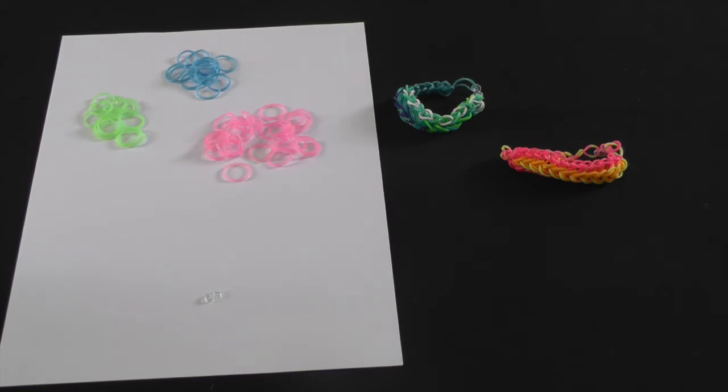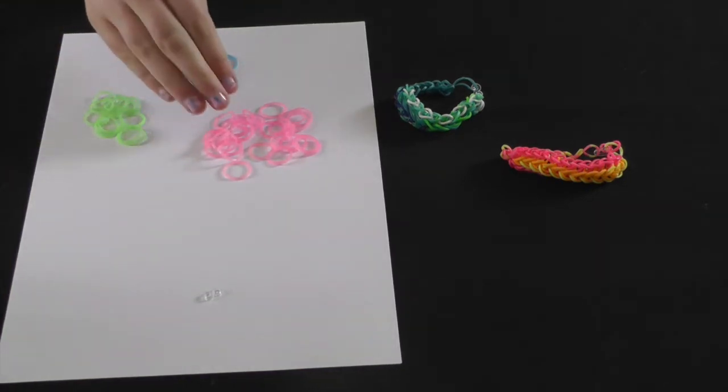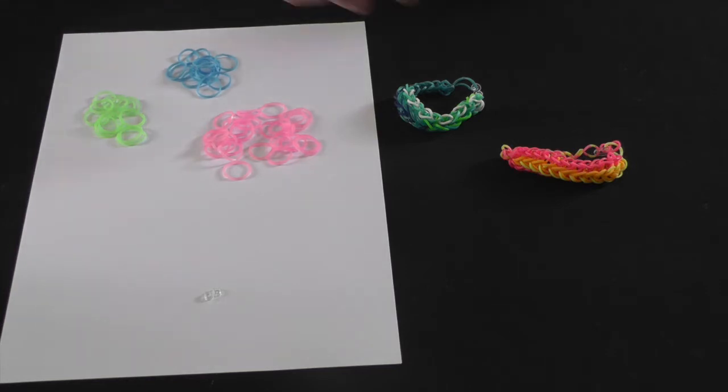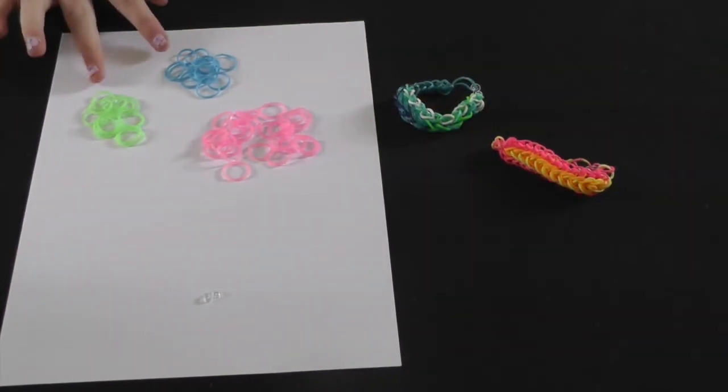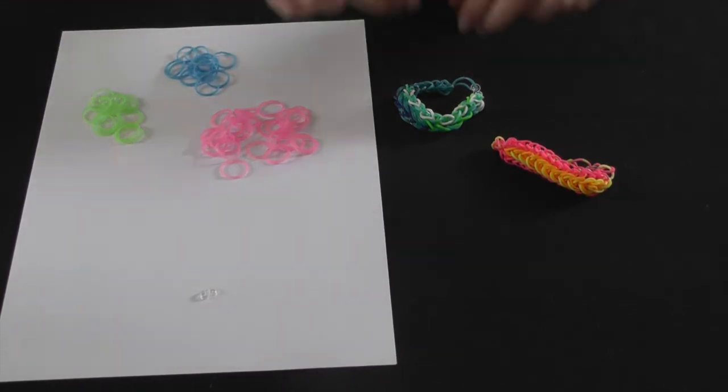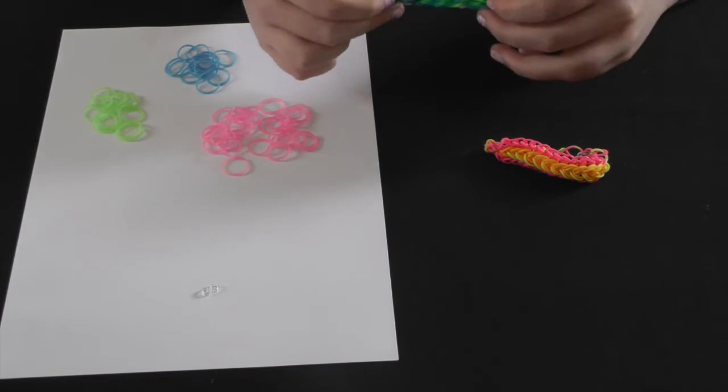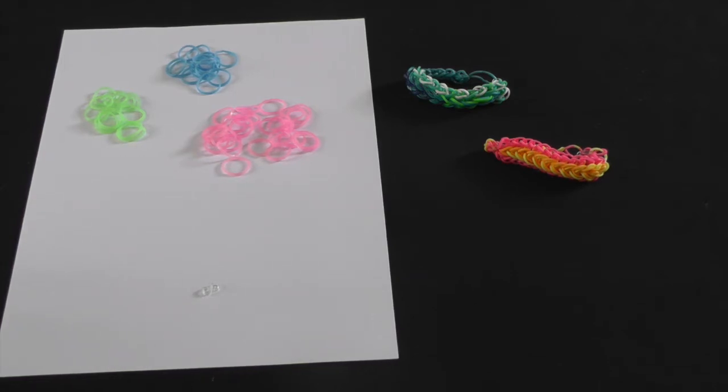What we're going to need to make the bracelet is 24 or 25 of one color of bands, which makes the outside, this bit. Then we will need two sets of 12 bands to make the inside bit, this bit. I'm sorry if it looks really confusing. Hope you'll see it in the video. Obviously, we are also going to need an S-clip.